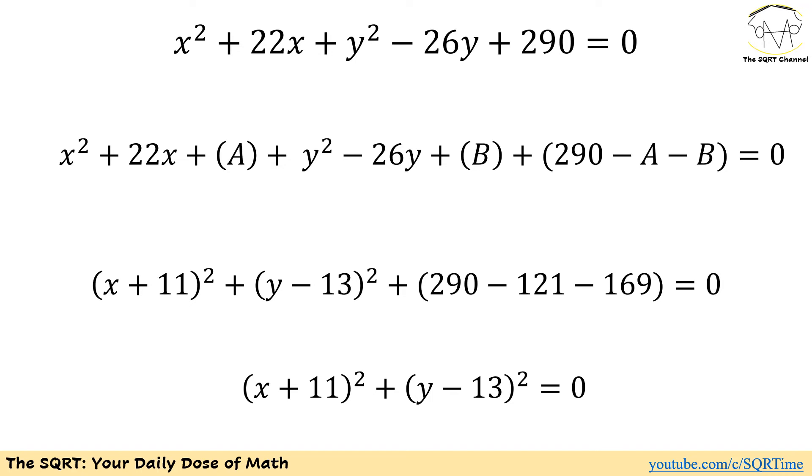To do this, obviously we have x² and 22x. We are going to need a constant like A to be able to do this. On the other hand, for the second term we have y² and negative 26y. Obviously we are going to need another term like B.